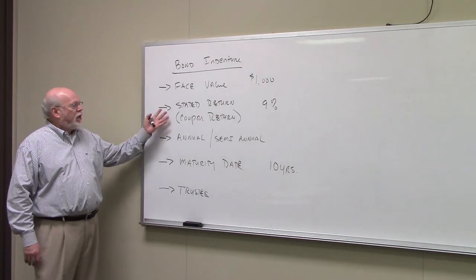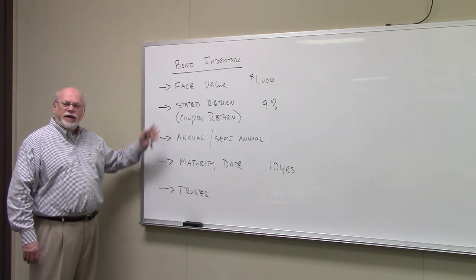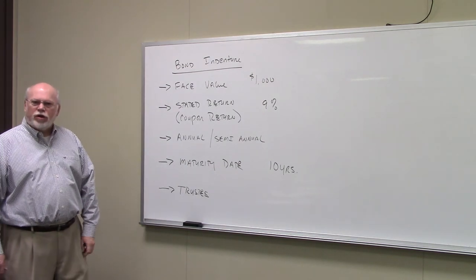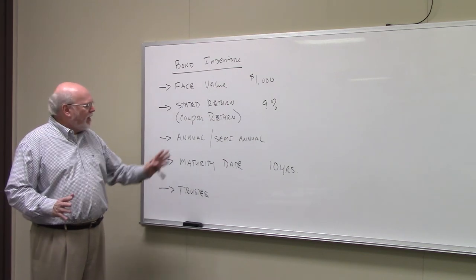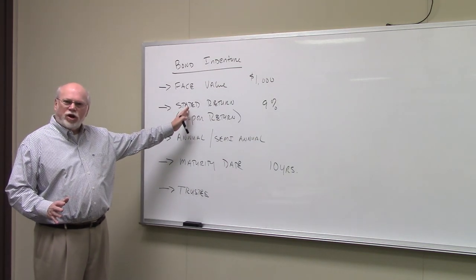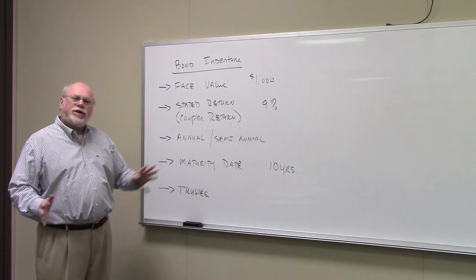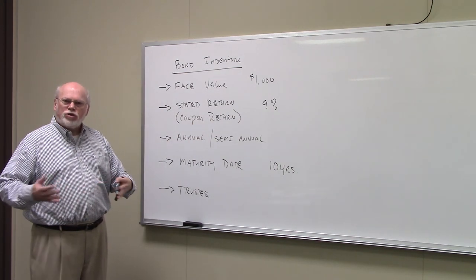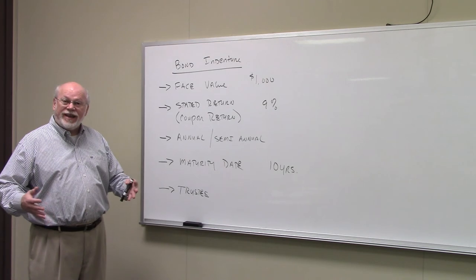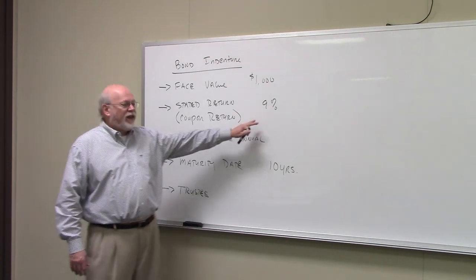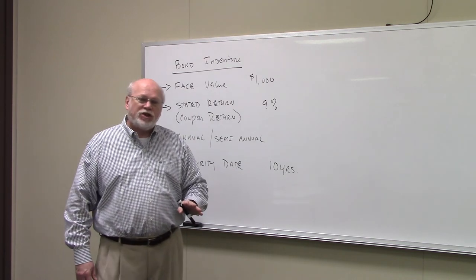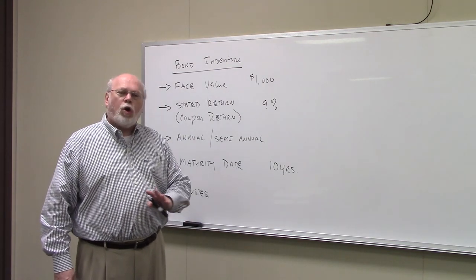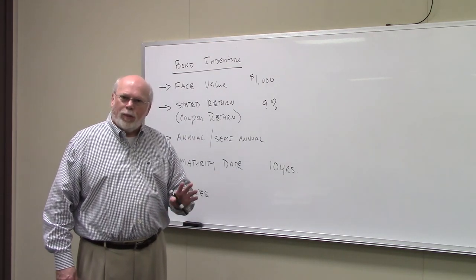Another common element of bond indenture is the stated return on the bond, often referred to as the coupon return. Technically, stated return is correct. Coupon return you hear that almost as often, but technically it's called the stated return. In finance, interest rates, growth rates, inflation rates, rates of return are always stated on an annual basis.